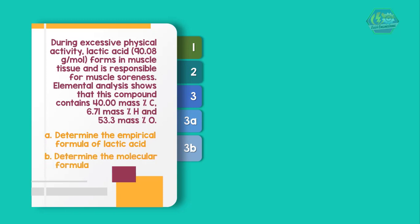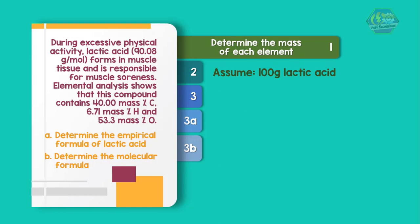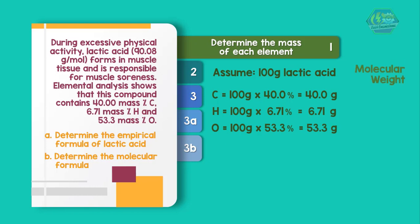Determine the mass of each element. We are given mass percent of each element. We need to assume that the lactic acid is 100 grams so that we can express the mass percent of each element in grams. Hence we have C equals 40.08 grams. In the same way, H equals 6.71 grams and oxygen equals 53.3 grams.